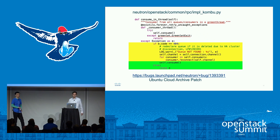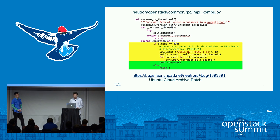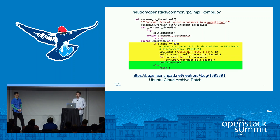On the Neutron side, we found some Kombu driver improvements that really helped. One patch from the Ubuntu Cloud Archive added exception handling to detect the 404 error and redeclare the queue, since it was likely deleted because of HA cluster failover. It would essentially have the consumer reconnect. However, we noticed that although the queue was getting redeclared and reconnected, it wasn't actually consuming, so we had to add a few more lines to actually help it consume.